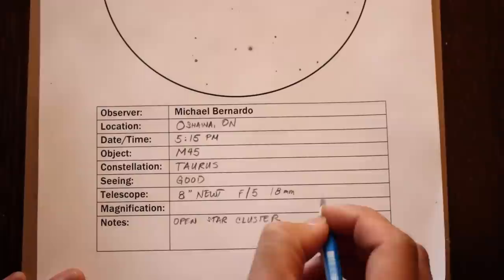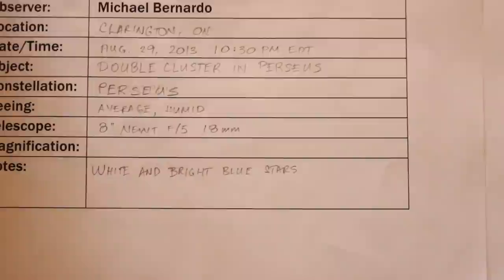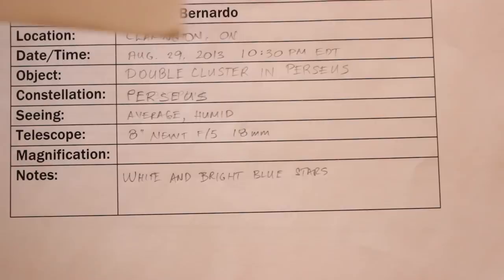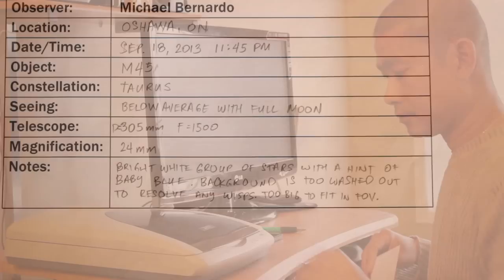Include the name of the object and the constellation it's in. Write down the telescope and eyepiece you used. Record a description of what you observed. You can even record your experience in finding the object. It doesn't have to be technical.